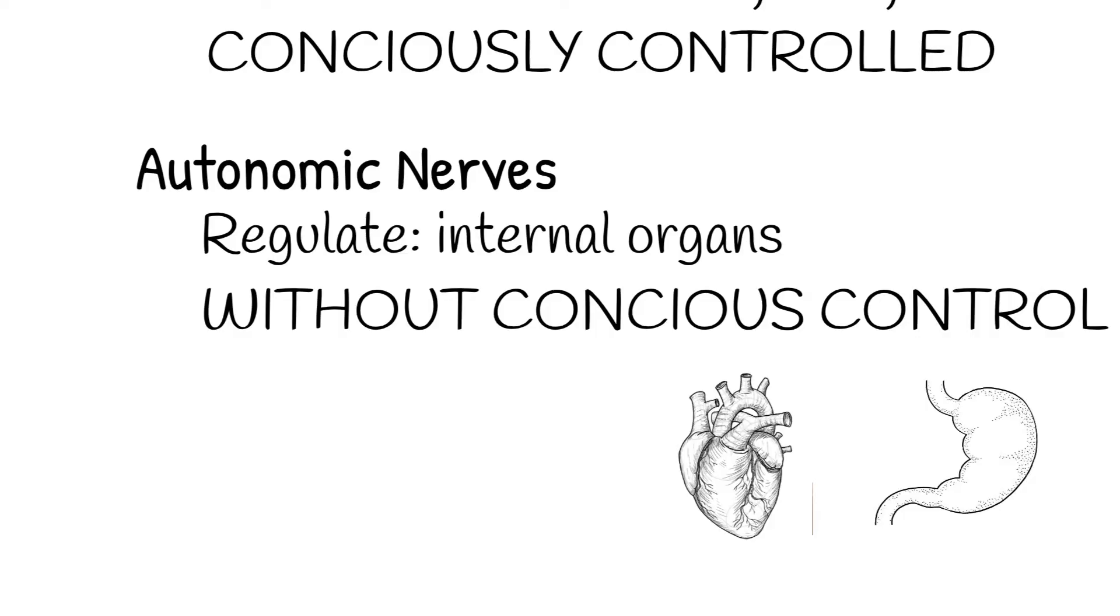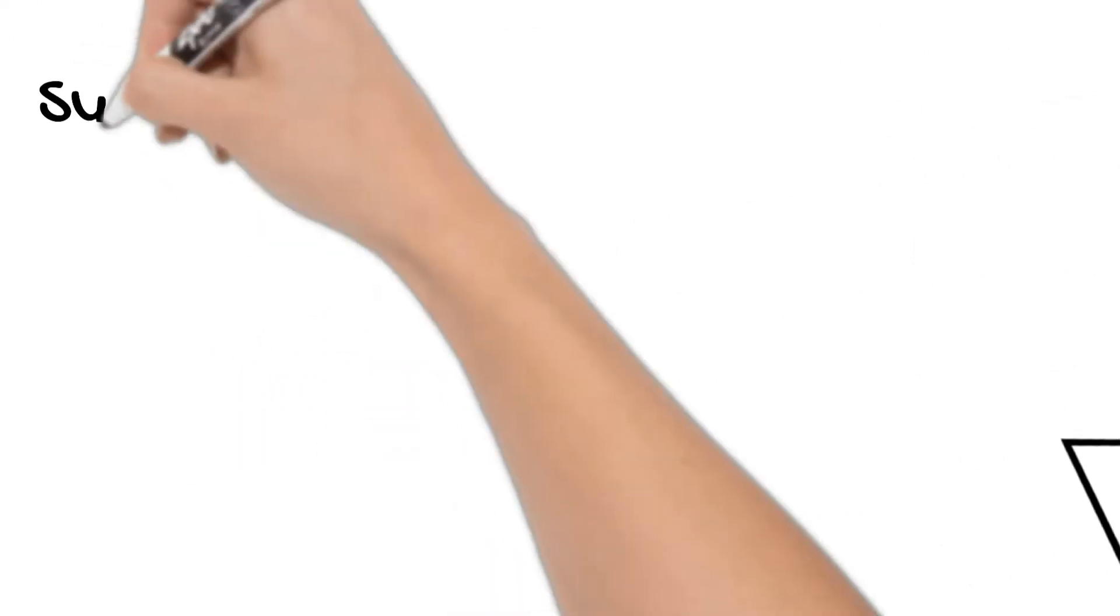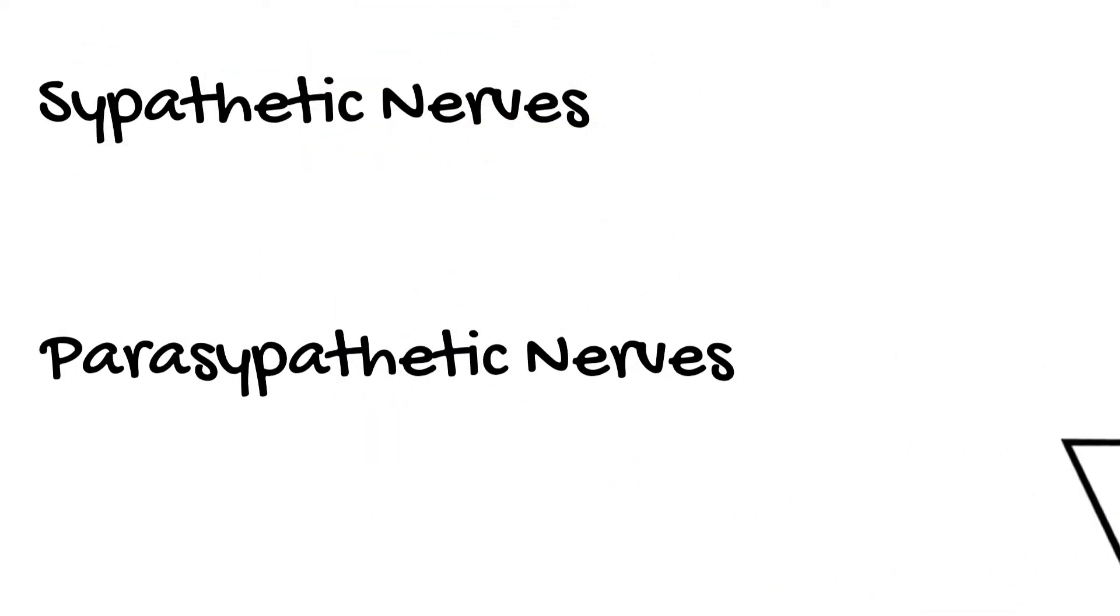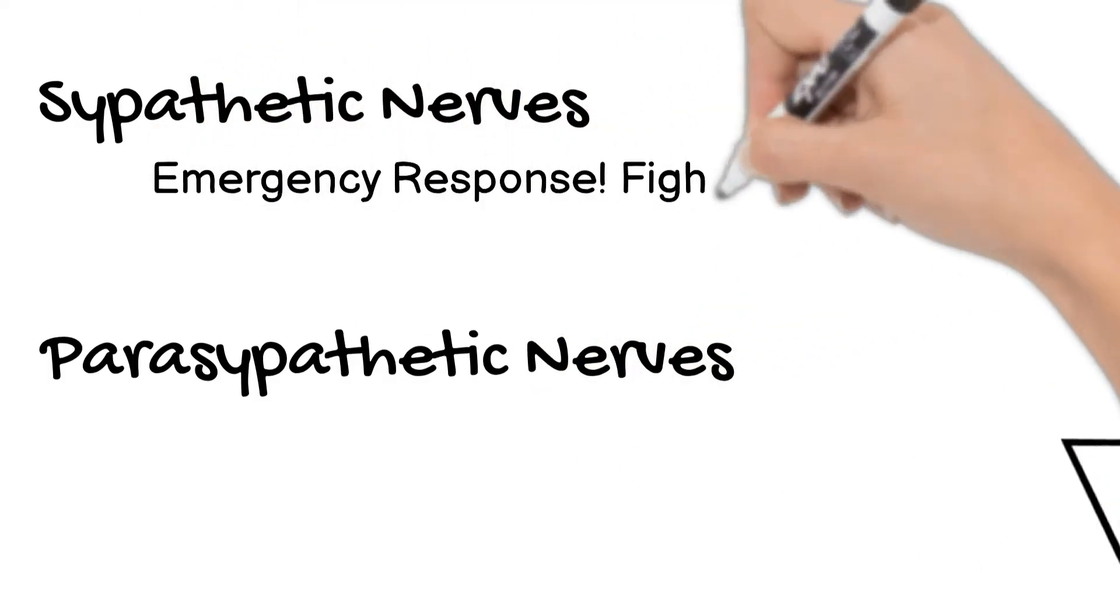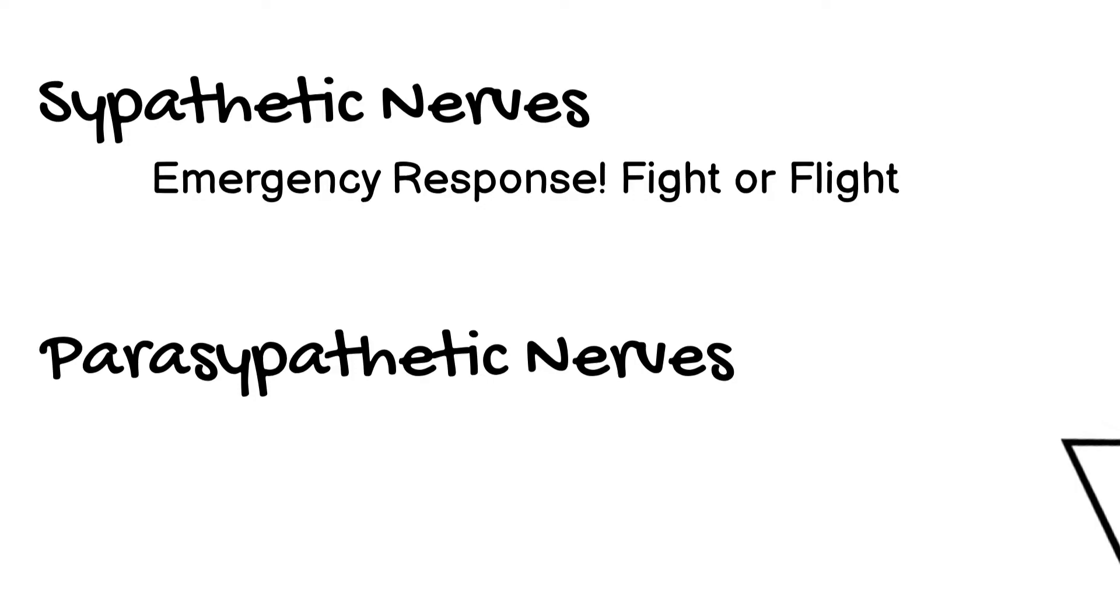The autonomic nerves are divided into two types: sympathetic and parasympathetic. Sympathetic nerves turn the system on to get ready for an emergency. This is sometimes called your fight or flight response.